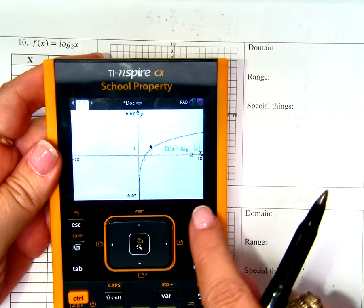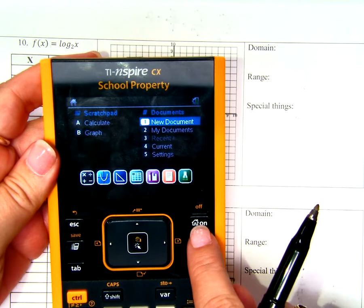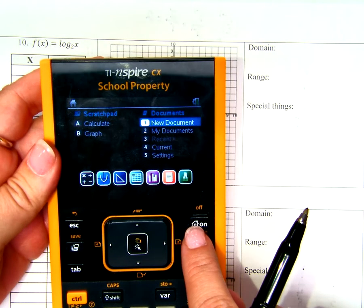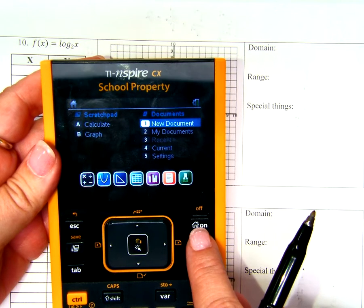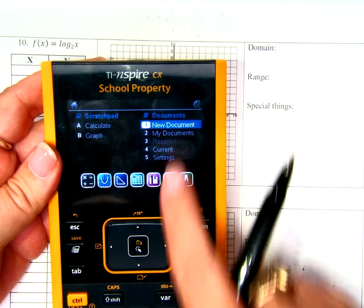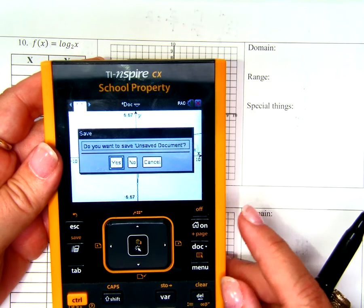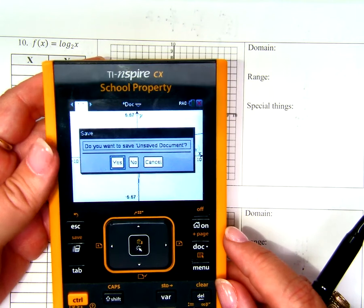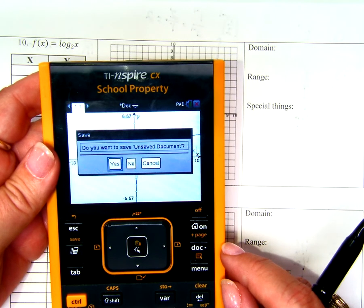So, once it's on, I need to create a new document. I need to go home. Not to your actual home, but the calculator home. And I need to choose new document. Guys, we're going to choose a new document every day. We're not going to do our work on scratch pad. We're going to do our work in the documents. Does everybody understand that?